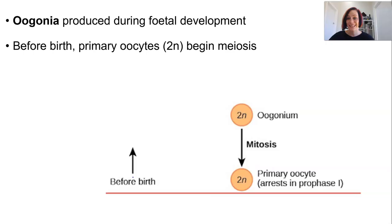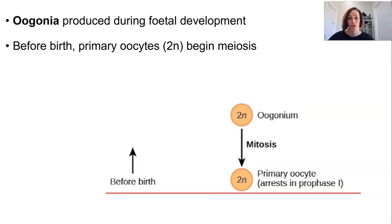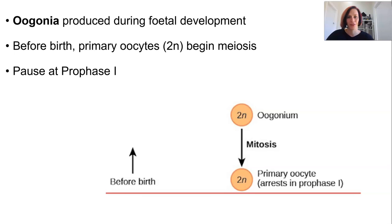The remaining cells become primary oocytes, which are diploid. The fetus will be born with about one to two million primary oocytes per ovary, and this is all they will ever receive in their entire lifetime. These primary oocytes begin to undergo meiosis, but their development is paused once they reach prophase one — that's the very first stage — meaning they completed DNA replication to sister chromatids but then just sit and wait.